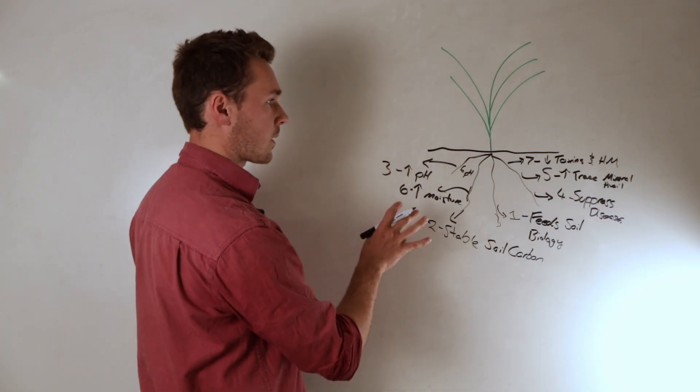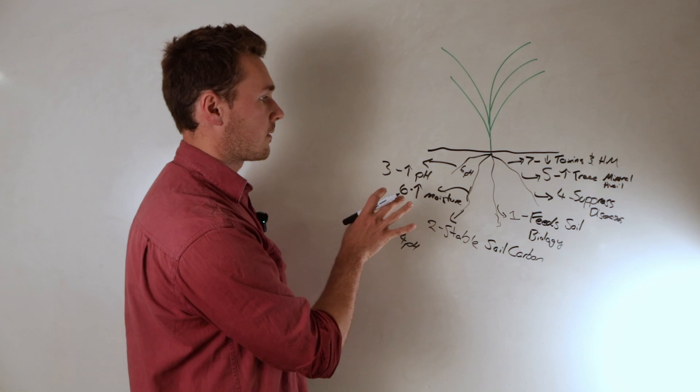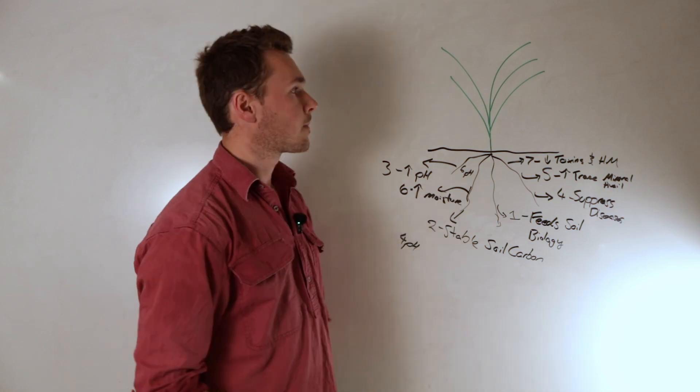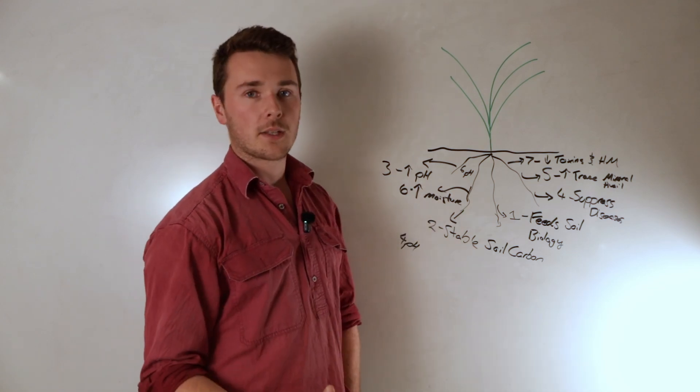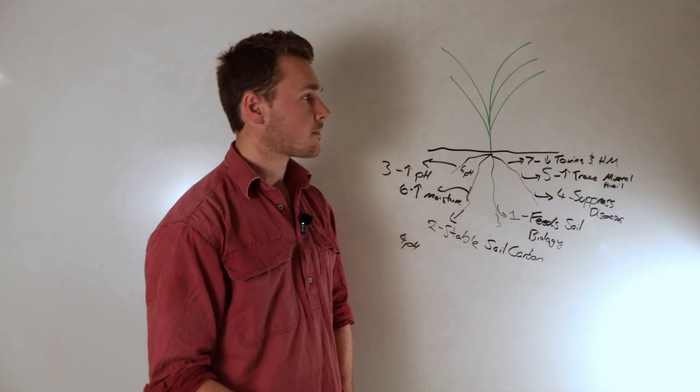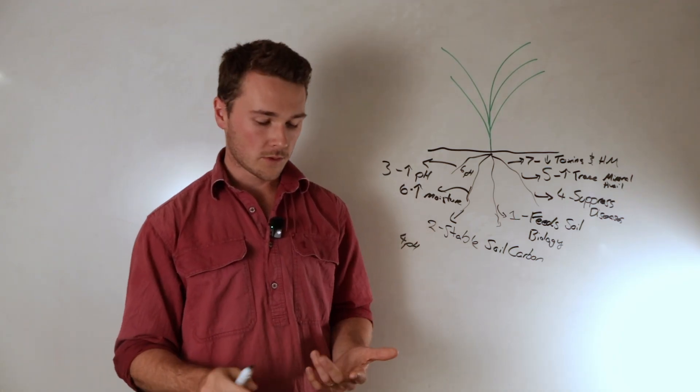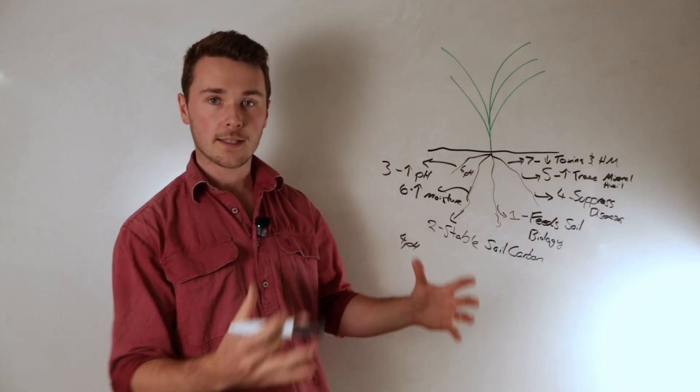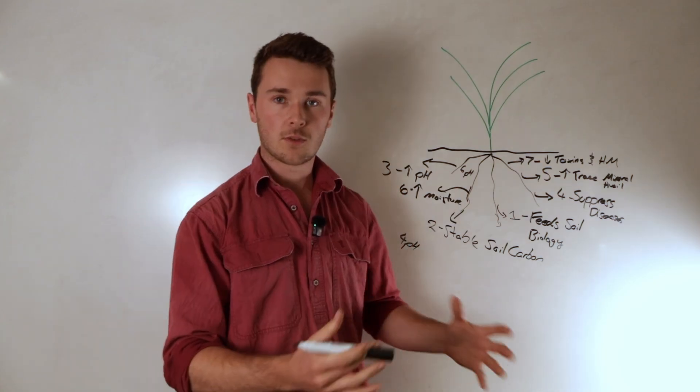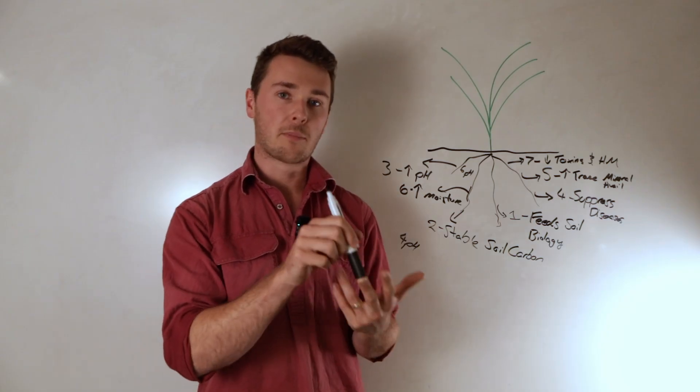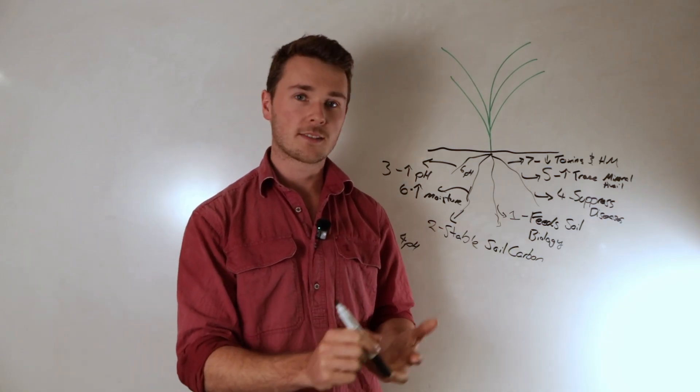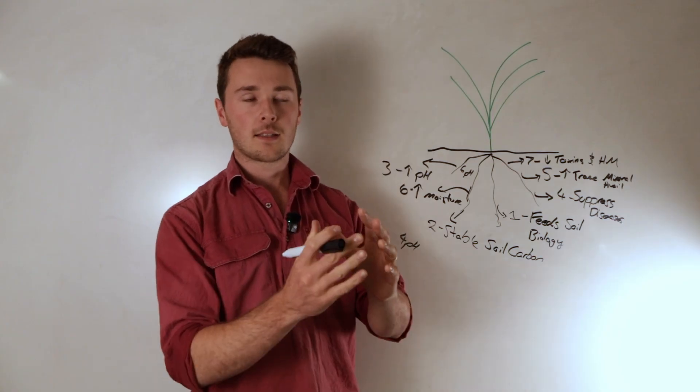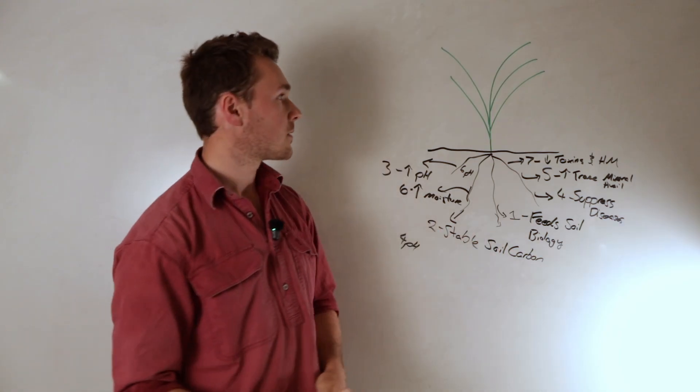So the question is how can we increase the rate of root exudation? A very sick plant will still release root exudates. What we want to do are three things: increase the overall amount of carbohydrates the plant has to put out into the soil, increase the proportion of those carbohydrates that the plant can put out, and extend the length of time the plant can put them out.